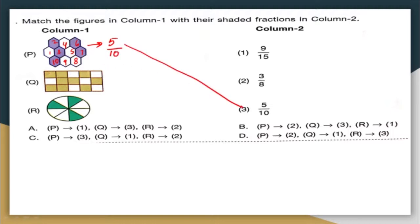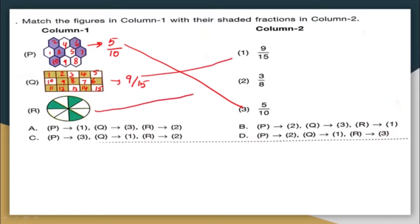For figure Q, there are 15 rectangles, of which 9 are shaded. So the fraction is 9 out of 15. This matches with option 1. For figure R, there are 8 regions of which 3 are shaded, giving a fraction of 3 out of 8.